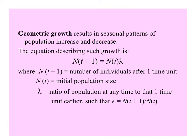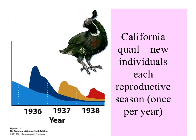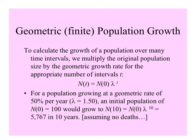Lambda equals N(t+1) divided by N(t). The California quail, for example, gets new individuals in the population each reproductive season, once per year. To figure out population growth over many time intervals, you multiply the original population size by the geometric growth rate lambda for the appropriate number of intervals. For example, a population growing at a geometric rate of 50% per year — lambda equals 1.5 — with an initial population of 100 would grow to 5,767 in 10 years, assuming everybody born stays around.